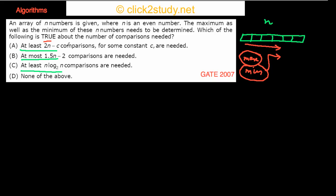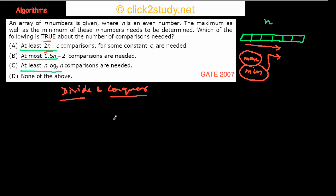What we are trying to find is: can we do better than 2n? Can we get 1.5n instead? It turns out you can, and the algorithm you need for that is divide and conquer. Using divide and conquer to find maximum and minimum, you divide the array into two parts and recurse on both parts.